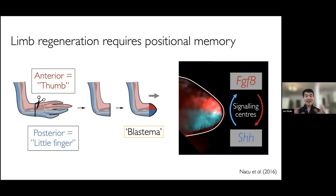I was very attracted to this system to study positional memory because it's a relatively simple modular system with two components — anterior and posterior — that are together necessary to drive regeneration. It's a very robust and simple system to begin to look at this process. More remarkably, not only is it necessary for regeneration, but actually these two modular identities are together sufficient to pattern a limb-like structure.